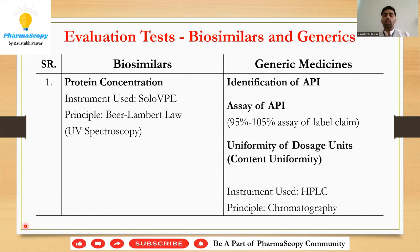Similarly, when making an emulsion or suspension, content uniformity plays a major role because the drug should be uniformly present at different locations within the suspension or emulsion. We usually go with the HPLC method, based on the chromatographic principle. For details on chromatography, you can look it up online.